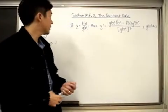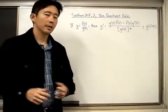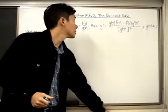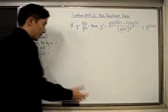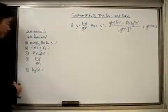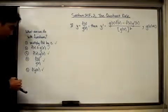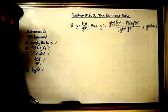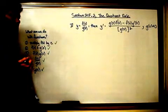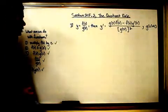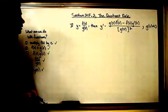Okay, hello everyone. Let's go ahead and take a look at section 21 f.2, the last rule, which is called the Quotient Rule. By finishing up the Quotient Rule, you are basically done with all the basic rules in order to calculate the derivative function for any particular situation that you're given initially.